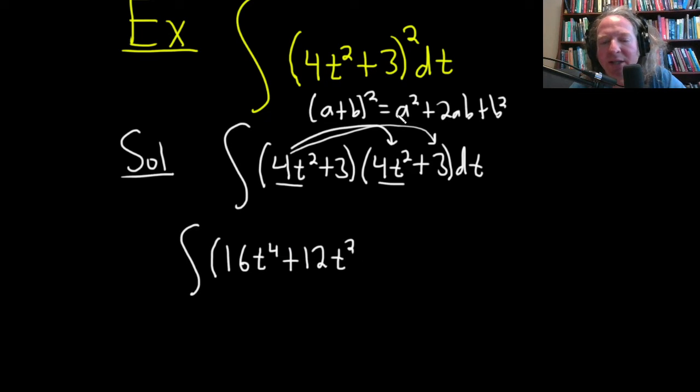And then this times this is also going to be 12t squared. And then this times this is going to be 9. And then we have the dt.